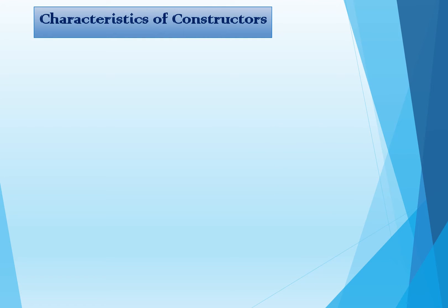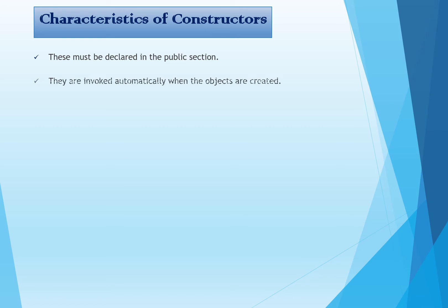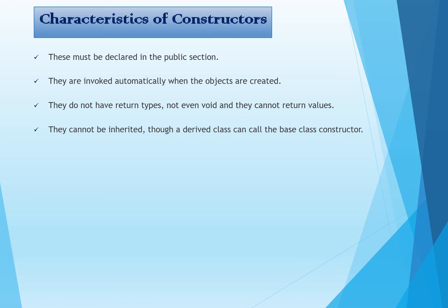Here are some characteristics of constructors. They must be declared in the public section, because constructors are called automatically when an object is created — if declared in the private or protected section, they won't be called. They are invoked automatically when objects are created. They do not have return types, not even void, and they cannot return values. They cannot be inherited, though a derived class can call the base class constructor — in inheritance, data members and member functions are part of the derived class, but constructors cannot be inherited.